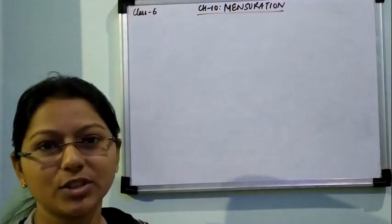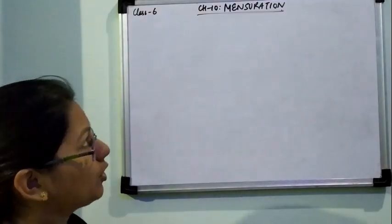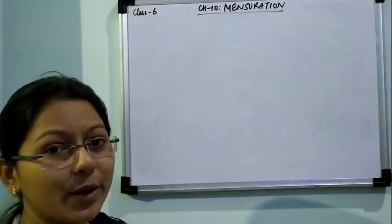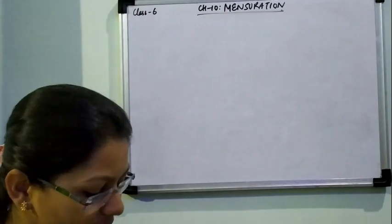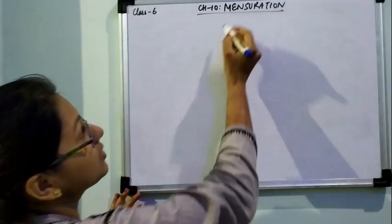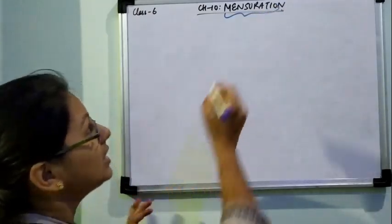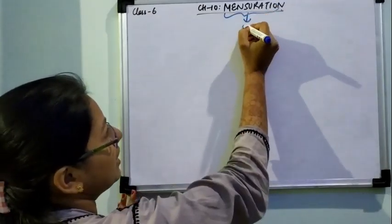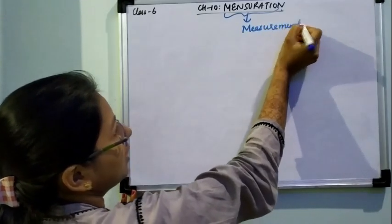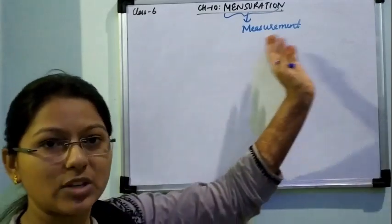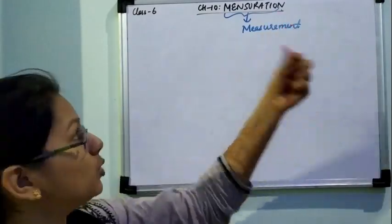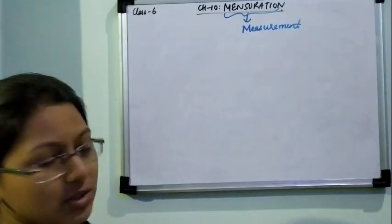Good morning children. Today we are going to start a new chapter — Chapter 10, Mensuration. In this chapter, let me tell you which topics we will be covering. The meaning of this word is related to measurement. Simply, whatever measurement we are doing and whatever calculation we will do, that all will come under the topic mensuration.